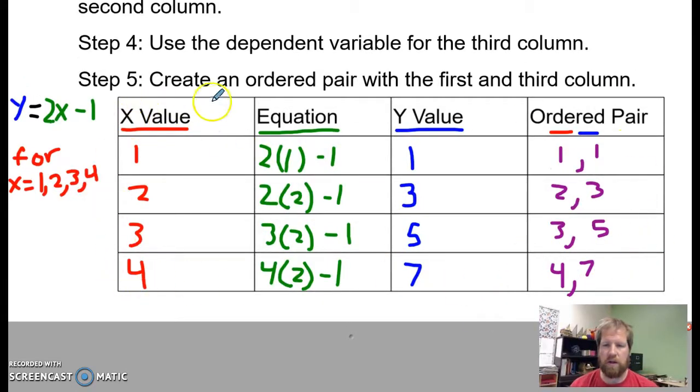So I've got my table all filled out. And these ordered pairs are going to be my solutions. These are going to be four solutions that I've found. In any equation there's an infinite number of solutions. It keeps going on forever. That line keeps going on forever. But these are four of them that I've found. And I've used x values that are pretty close to the origin, pretty close to the center. So I should be able to graph these ordered pairs fairly easily.